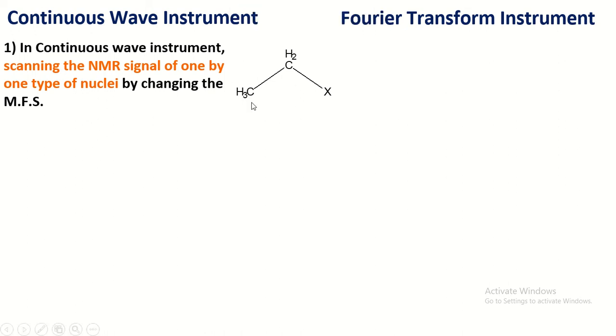Consider this compound. In this compound, CH3, CH2, the chemical shift of CH2 is more than CH3. Therefore, first scan the signal of CH2 and CH3.